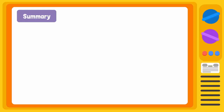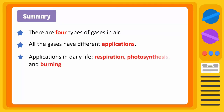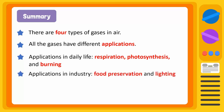We learnt that air is made up of four main gas types. Each gas has its own properties and applications. Some applications are essential to life, such as respiration, photosynthesis, and burning. Other applications have industrial value, such as food preservation and lighting.